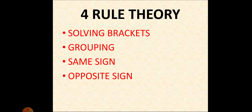The 4 rules are: solving brackets, then grouping, then same sign, and opposite sign. If we follow it systematically, we can solve any integer problem involving addition and subtraction without any confusion.